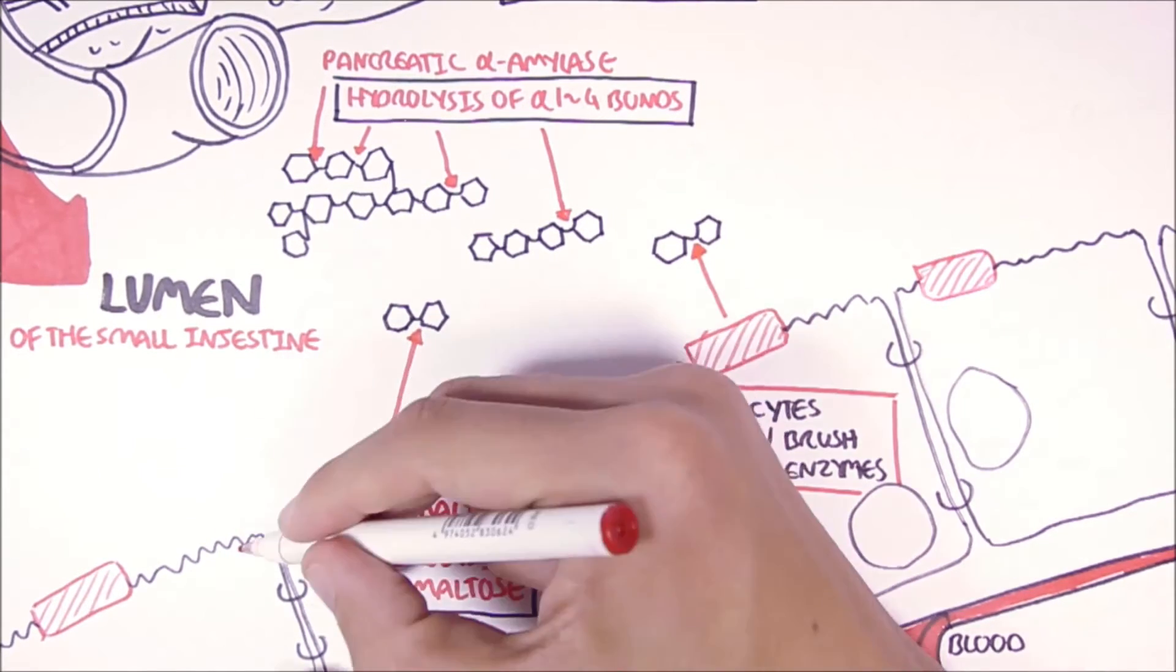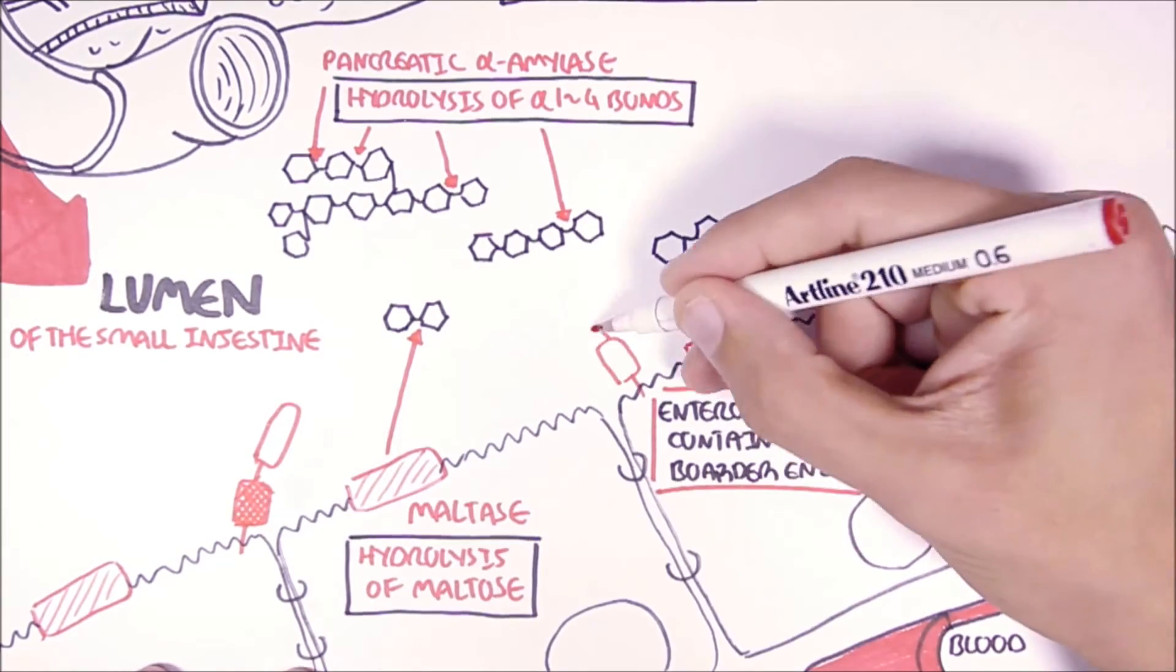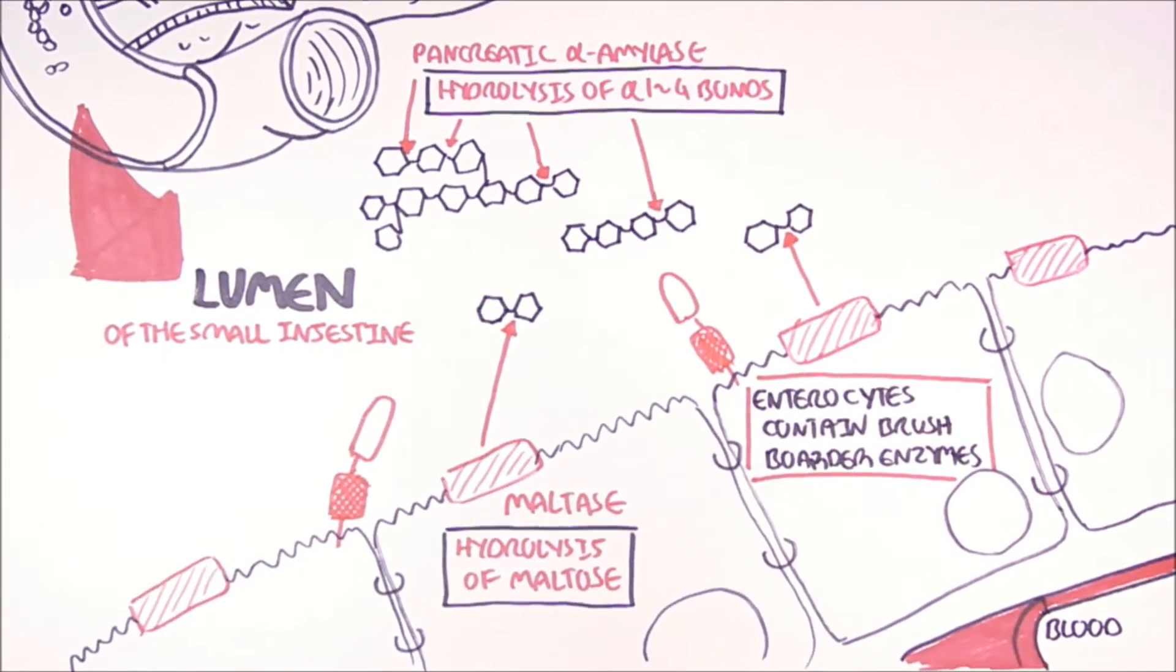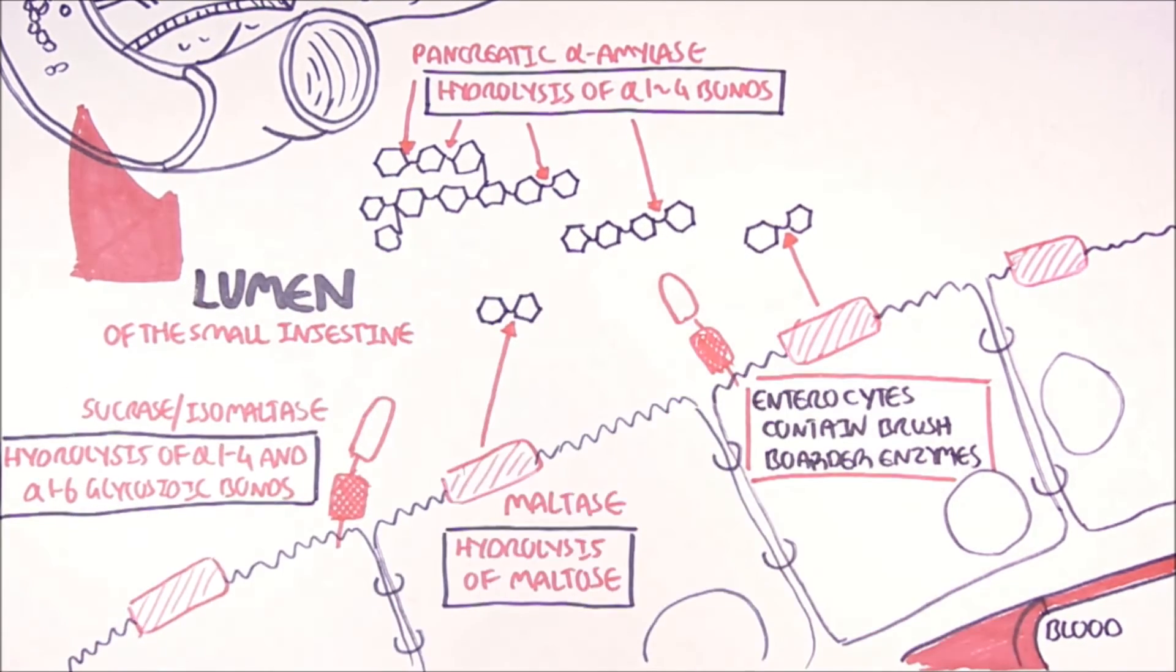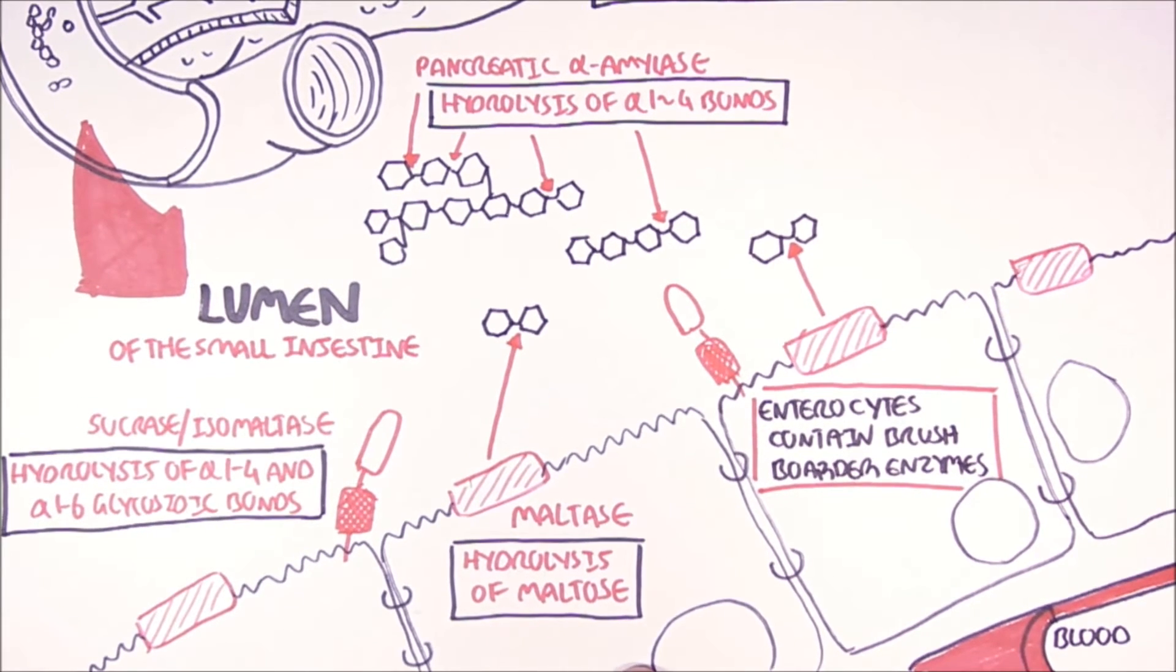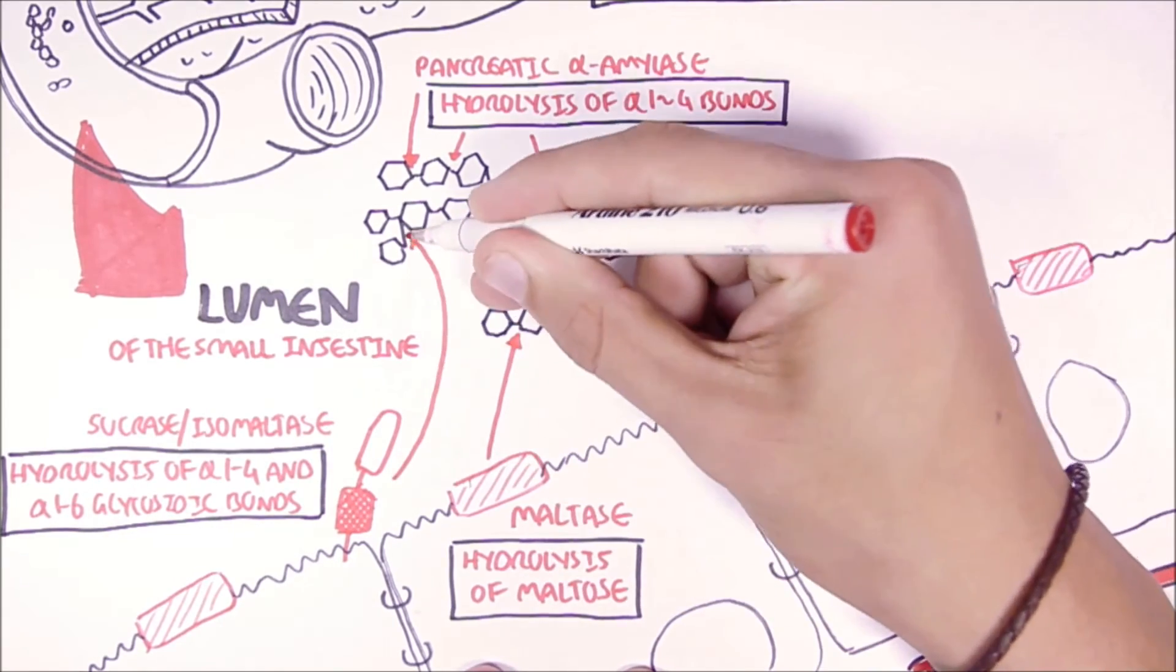Then you have another brush border enzyme called sucrase-isomaltase. Isomaltase will hydrolyze both the alpha-1,4 glycosidic bonds and alpha-1,6 glycosidic bonds. So what is important to know is that isomaltase will hydrolyze the branch points of starch here.